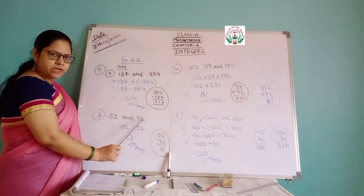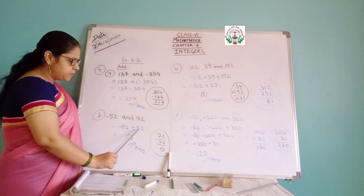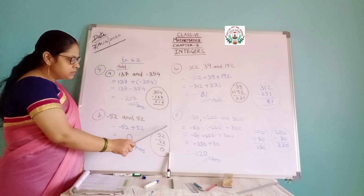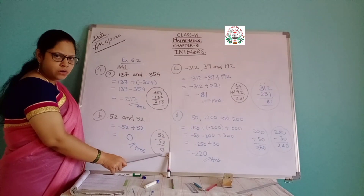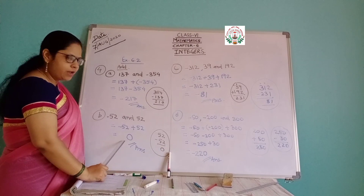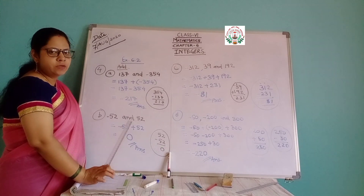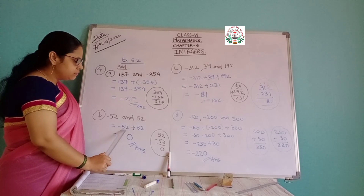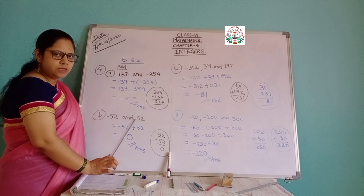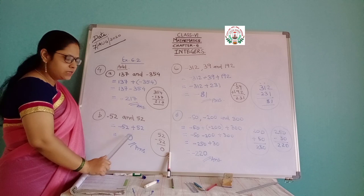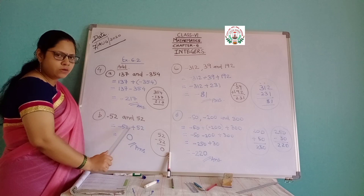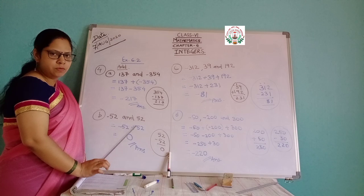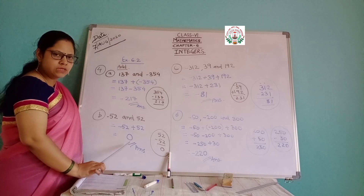Part B: minus 52 and plus 52. Minus and plus — minus means subtraction. Subtraction gives zero. Zero does not have any plus or minus sign. So zero is the answer.